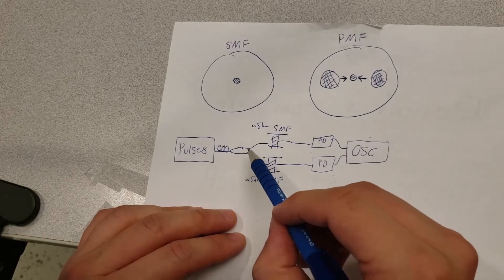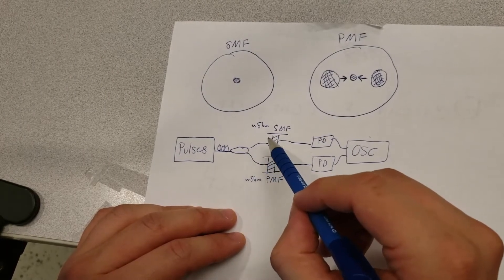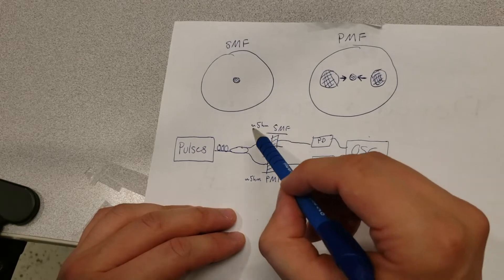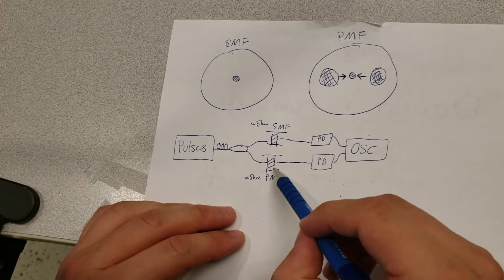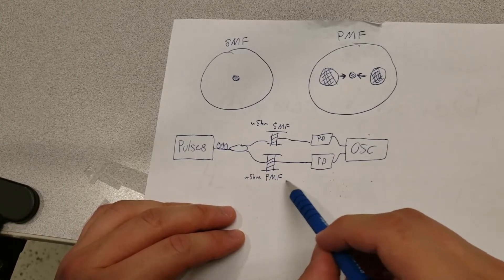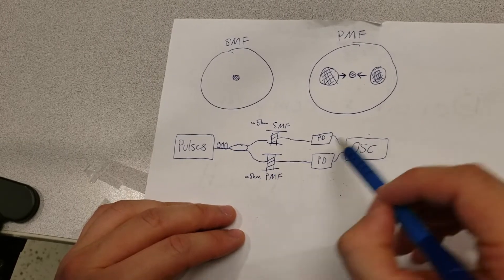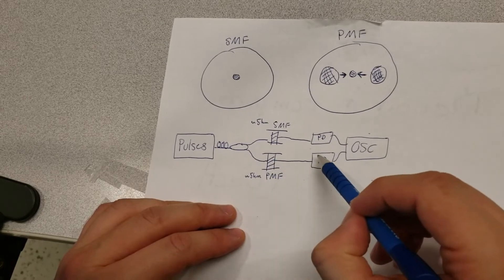Then we split it with a 50-50 coupler in two paths. One path contains an approximately 5 km single mode fiber which goes into a photodiode, and the other path contains an approximately 50 km long spool of polarization maintaining fiber that goes into a photodiode.